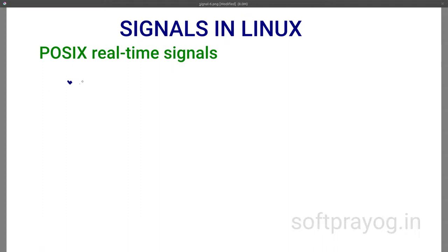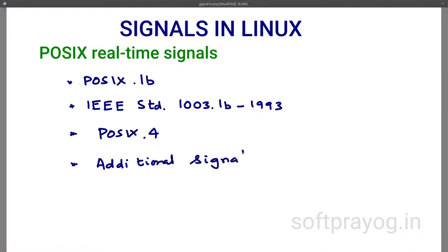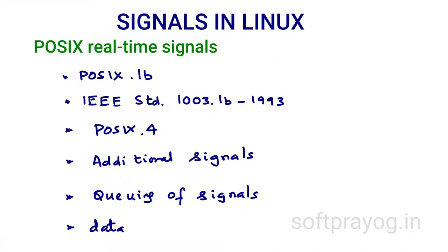POSIX real-time signals are as per POSIX.1B, or IEEE standard 1003.1B-1993, also called POSIX.4 during development. The standard is for real-time extensions for POSIX compliant operating systems. POSIX real-time signals provide queuing of signals and the ability to send a little data with a signal. We will look at POSIX real-time signals a little later in this video.